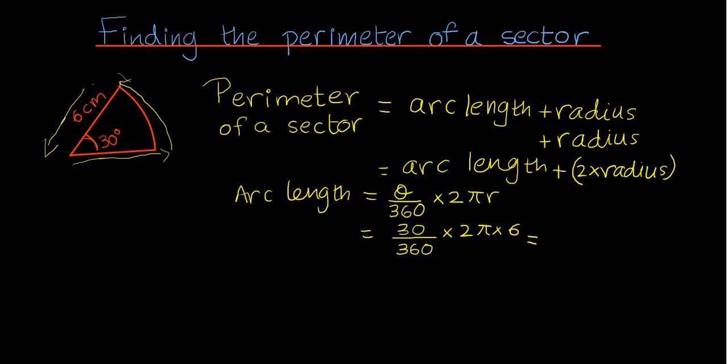So initially I will leave the arc length in terms of π. So that will be 6 times 2 is 12, 12 times 30 is 360, so the arc length will be 360π over 360, which can be simplified into π, since 360 over 360 cancels out to 1. So the arc length is π centimeters, which is rather convenient.